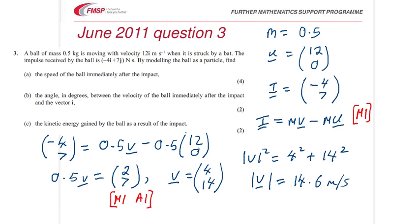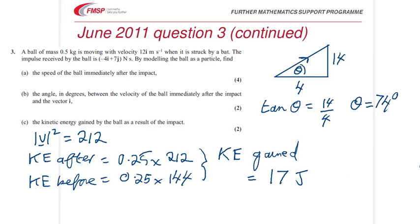To find the velocity, there was an M1 A1 for finding the angle on the next page. And lastly, there was an M1 A1 for the kinetic energy, for the two marks there. Eight marks in total.